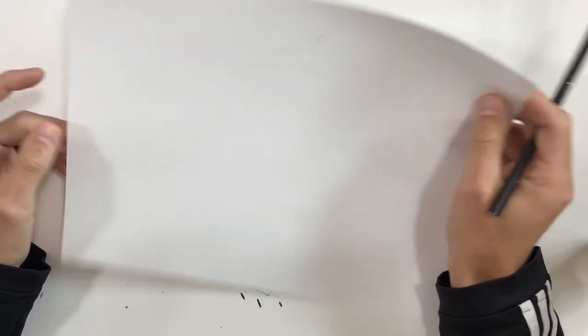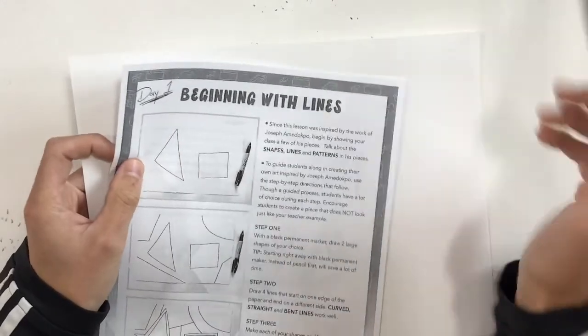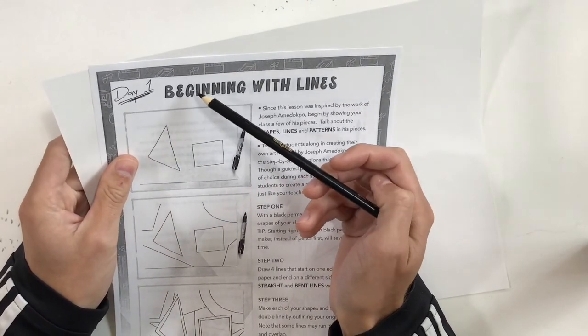Hey, third grade. Today you are going to get a white sheet of paper. You're also going to get this worksheet. It should say day one on it. That's the one you want to start with. You might get to the one that says day two today, but we'll see.